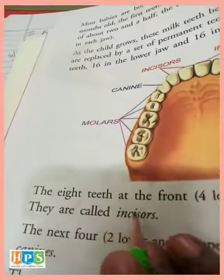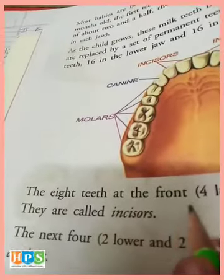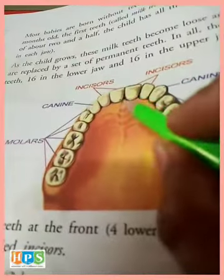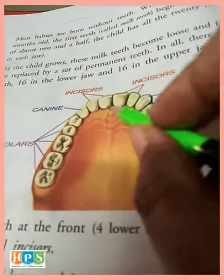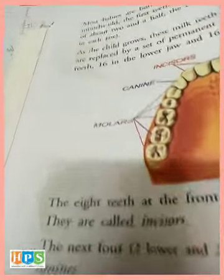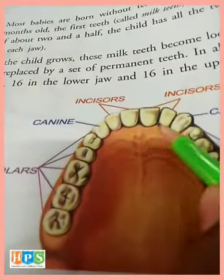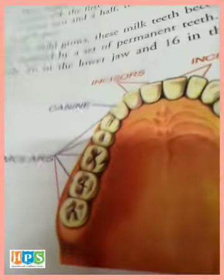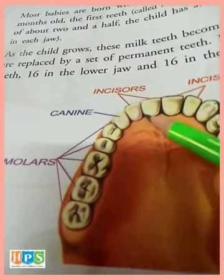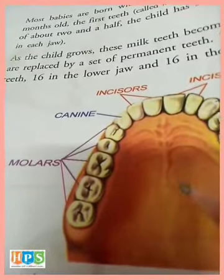The front teeth — 4 lower and 4 upper — are cutting teeth. Jo upar ke 4 aur neche ke 4 jo teeth hote hain front ke, aur cutting teeth hote hain. They are called incisors. Unko kya bolte hain? Incisors. In 4 teeth ko — upar ke aur neche ke — incisors kehte hain.